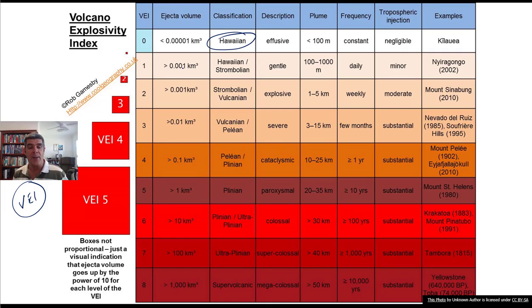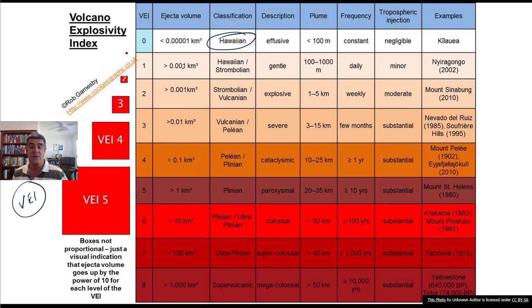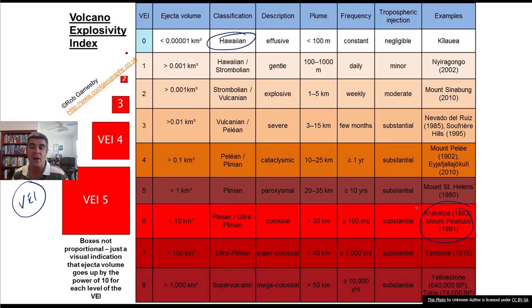Whereas we can go up to these super volcanoes — the Plinians are really the big, major, explosive, damaging kind of volcanic eruptions. In the next couple of videos, we're going to have a look at some of these really big volcanic eruptions, ones like Krakatoa, Mount Pinatubo, and Tambora.